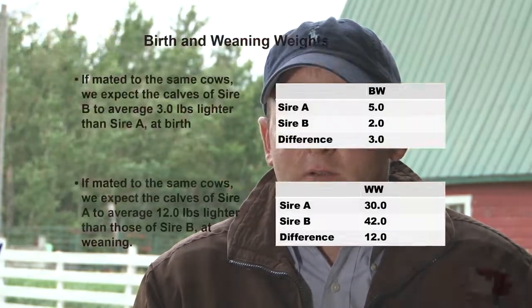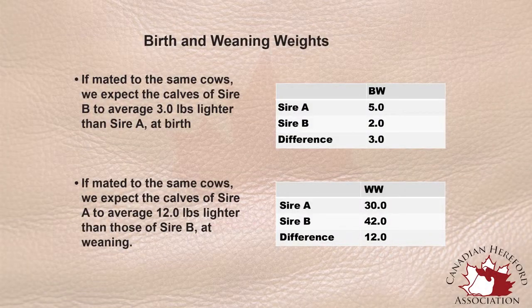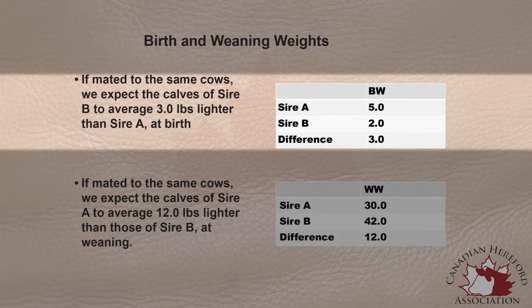For birth weight EPDs, the magnitude of the differences is much smaller than, say, for yearling weights or for weaning weights, but it's still expressed on a pounds or kilogram scale. A birth weight EPD value, whether it be 2 or 3 kilograms, is expressed in the same units universally.